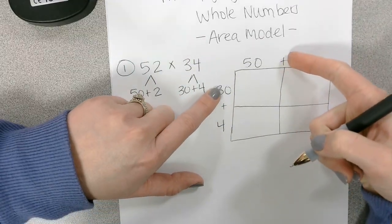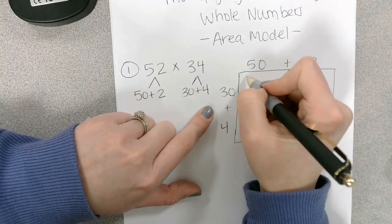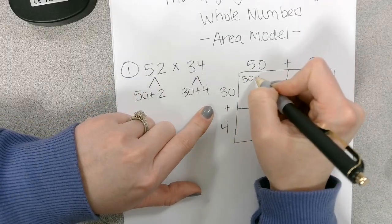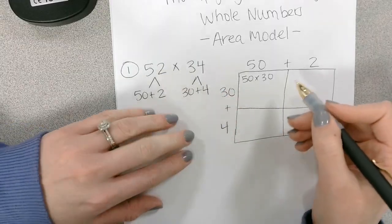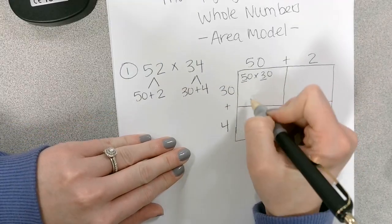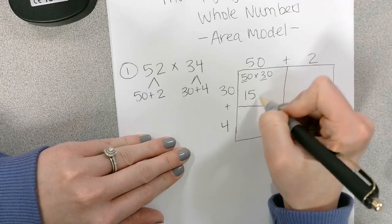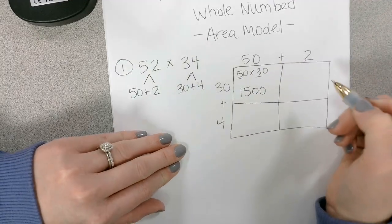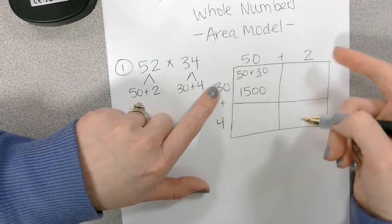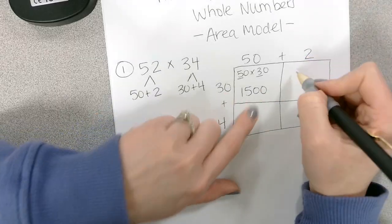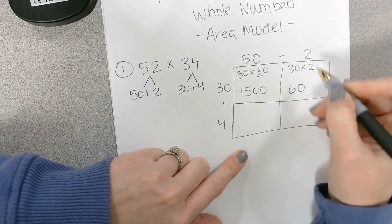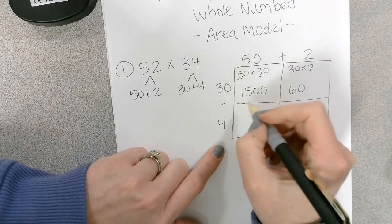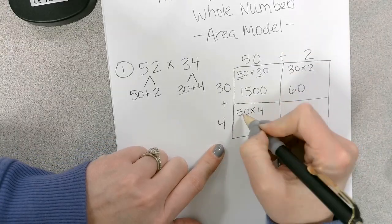So in this first square, I'm going to combine 50 and 30. So 50 times 30, well, it seems like a big number. These are both friendly numbers. 5 times 3 we know is 15, and then we just drop two zeros. So 1,500, and then we have 30 times 2, which we know is 60.